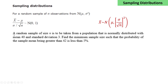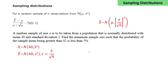Let's look at an example. A random sample of size n is to be taken from a population that is normally distributed with mean 40 and standard deviation 3. Find the minimum sample size such that the probability of the sample mean being greater than 42 is less than 5%. So we're given x normally distributed with mean 40 and standard deviation 3. From this, we take a sample size n, and the mean of this sample will be normally distributed with mean 40 and standard deviation s, where s equals 3 divided by root n.